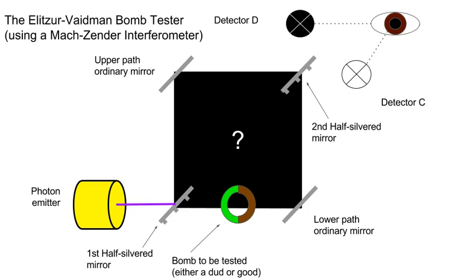The Elitzer-Vaidmann bomb tester is a quantum mechanics thought experiment that uses interaction-free measurements to verify that a bomb is functional without having to detonate it. It was conceived in 1993 by Avshalom Elitzer and Lev Vaidmann.